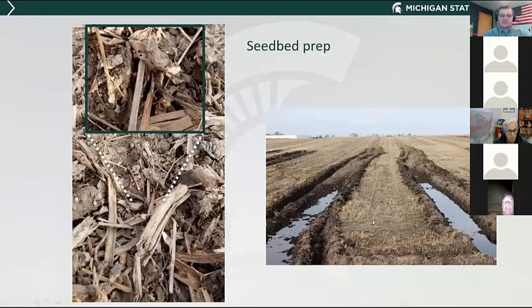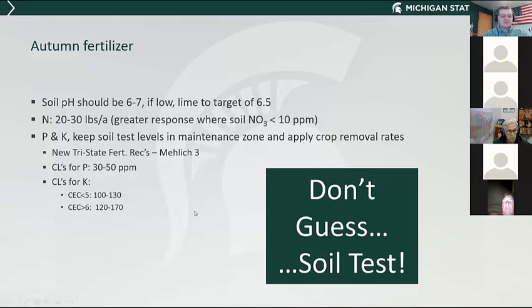Lastly, I wanted to wrap up with autumn fertilizer. Make sure your soil pH is in the 6 to 7 range — if it's low, lime to a target pH of 6.5. Twenty to thirty pounds of nitrogen is generally recommended, although the response is variable. You tend to see a greater response when soil nitrate levels are less than 10 ppm. A little nitrogen in the fall can help, especially where you have lower soil nitrate levels. For phosphorus and potassium, make sure you keep them within the maintenance zones and apply crop removal rates.